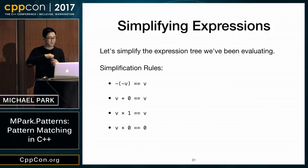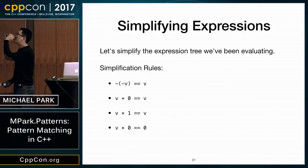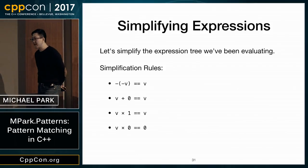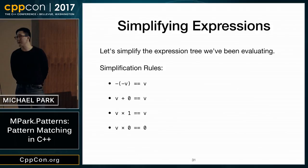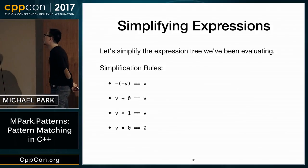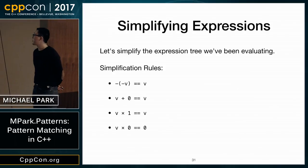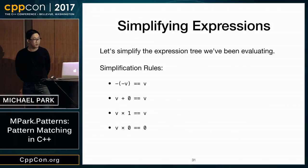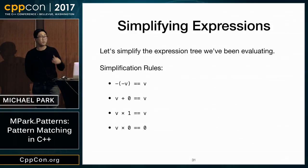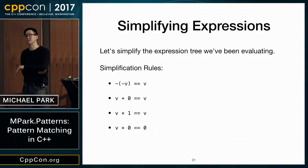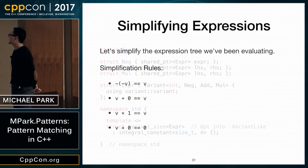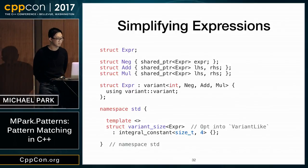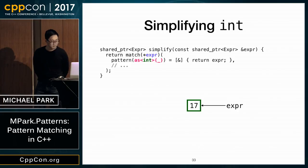Now the big example: we'll take the expression tree we've been working with and simplify it. The simplification rules are: double negation, plus zero, multiply by one, and multiply by zero. We want to keep the original tree intact and share as many nodes as possible.